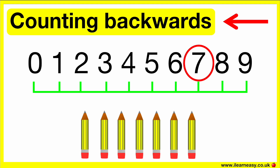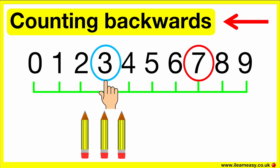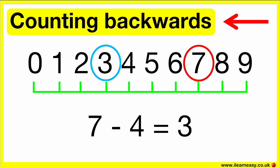Lena has seven pencils in her bag. She gives her friend four pencils. How many pencils does Lena have? Start at seven because she has seven pencils. Then, count back four. Six, five, four, three. So, Lena has three pencils. Seven minus four equals three.